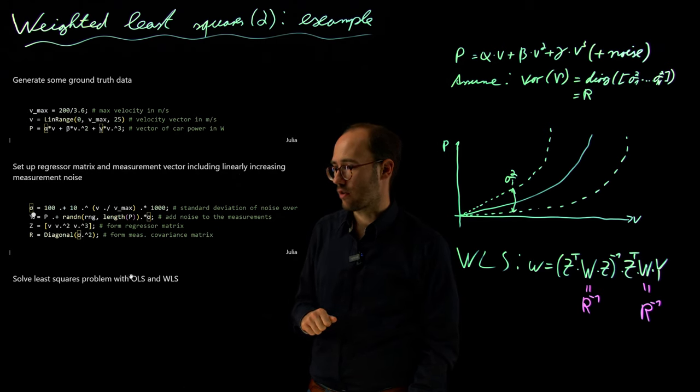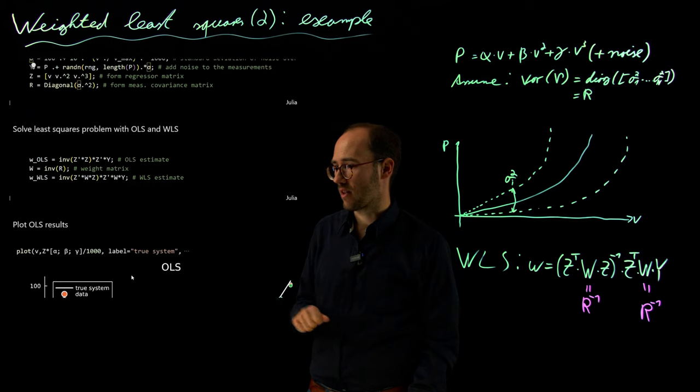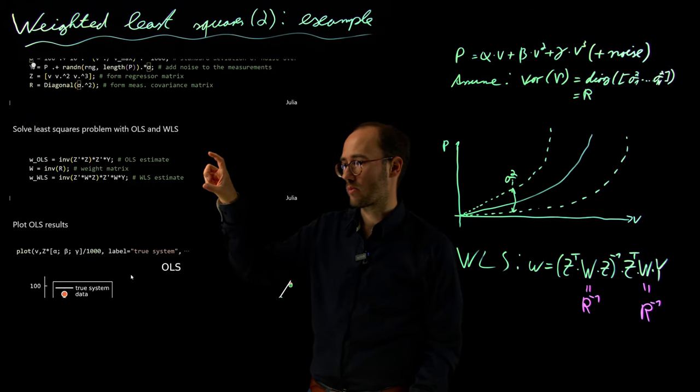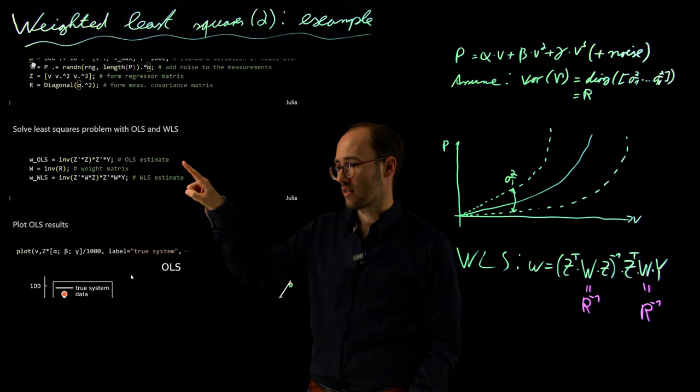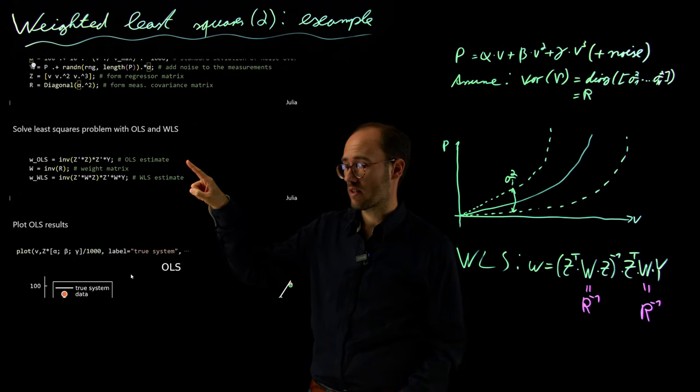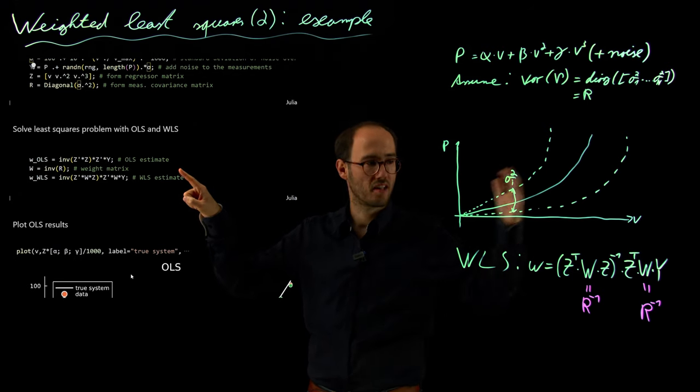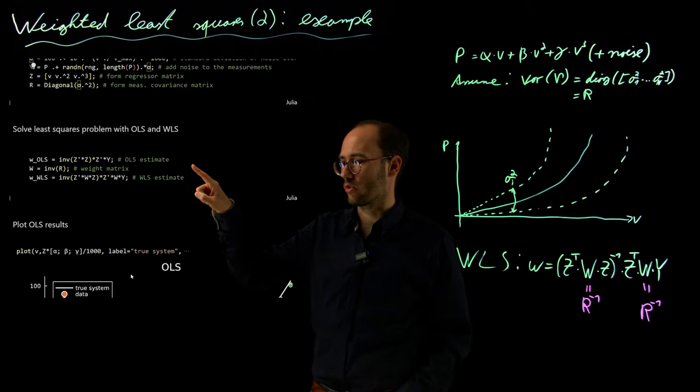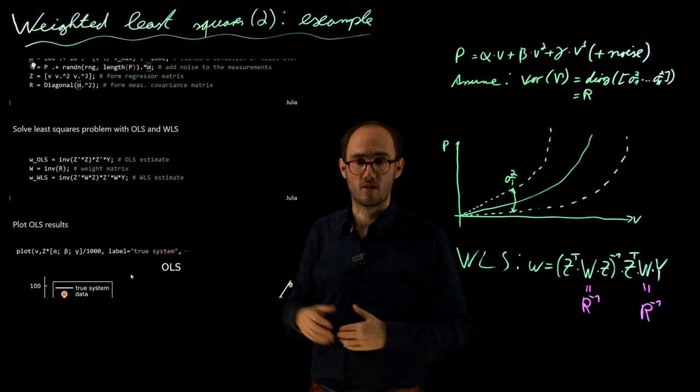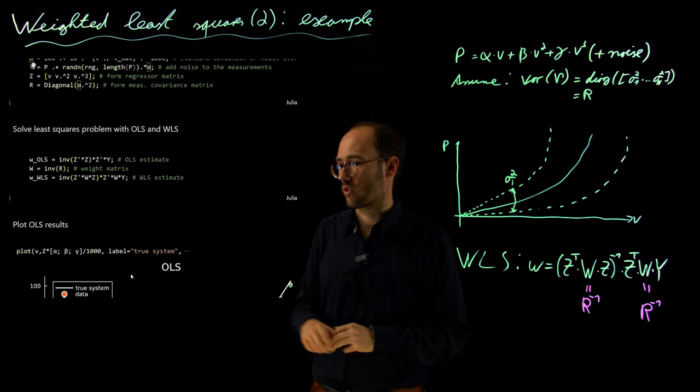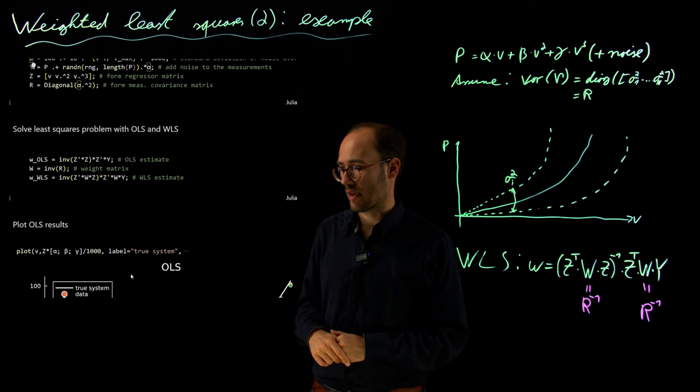Then for comparison reasons, in this cell what we basically do is we solve this problem twice. We solve it once for the normal, ordinary least squares where we basically ignore that we have this unusual noise characteristics. And then here the last two lines we basically solve it with the weighted least squares approach with this inverse of the noise covariance matrix as the weighting matrix.